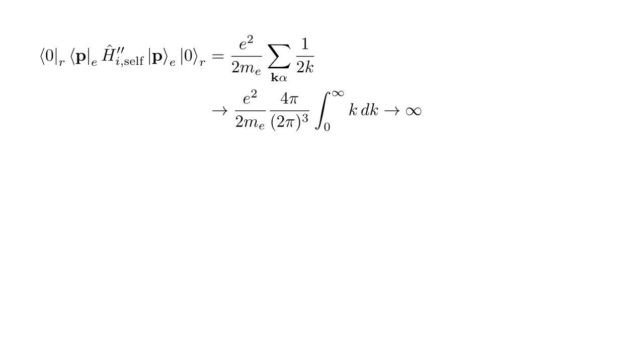The result is that the self-energy of the electron becomes a constant times an integral that diverges to infinity. Therefore, the electron has infinite self-energy due to its interaction with the vacuum state of the electromagnetic field. What are we supposed to do with this result?